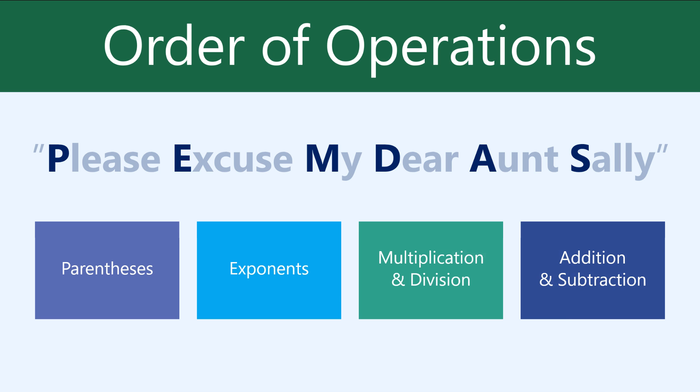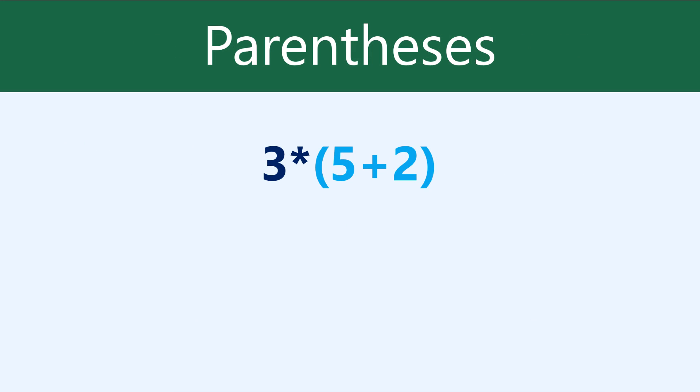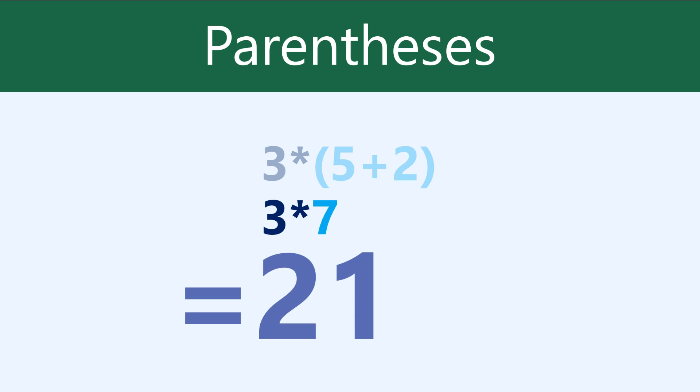Let's go over each of these in a little more detail. In this formula, 5 plus 2 is in parentheses, so we'll calculate that first to get 7. And then we can just multiply 3 times 7 to get 21.